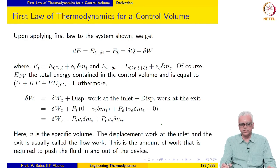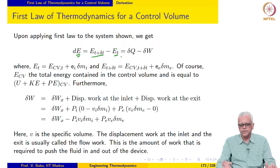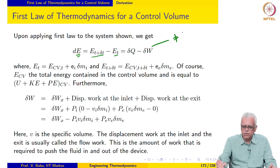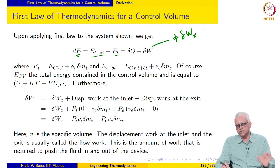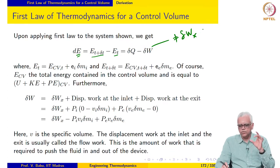If we apply the first law to this system, we get dE = δq − δw, where dE is the change in total energy. Notice we write δw, not δwₓ, because δwₓ is the work interaction between the device and surroundings, which is not necessarily equal to the total work interaction of the system — there is displacement work that must also be accounted for.